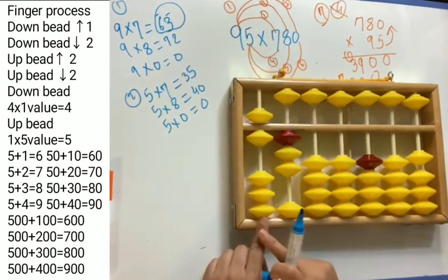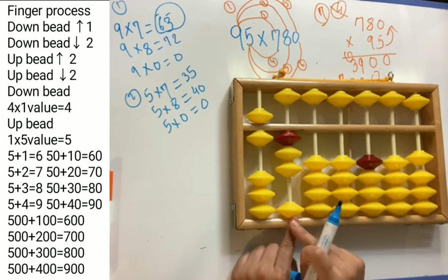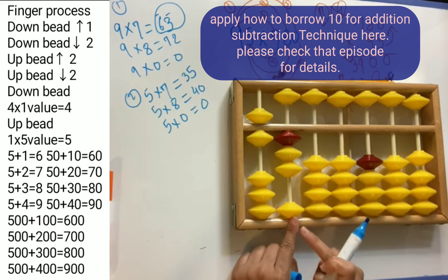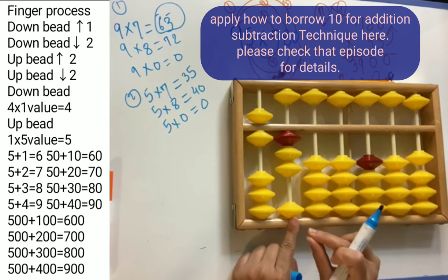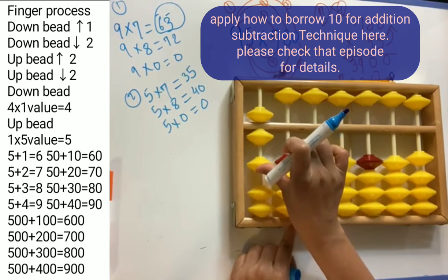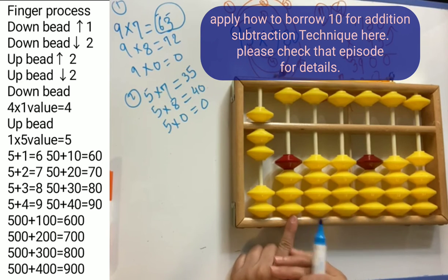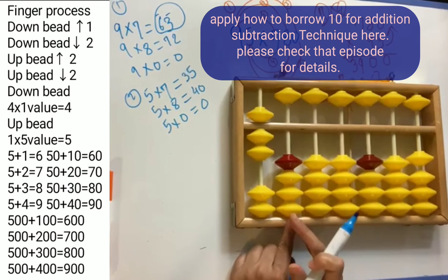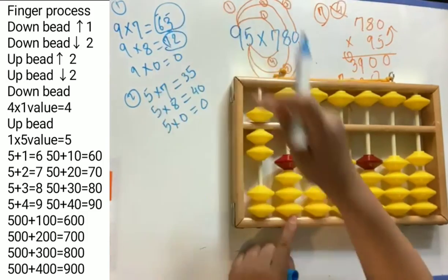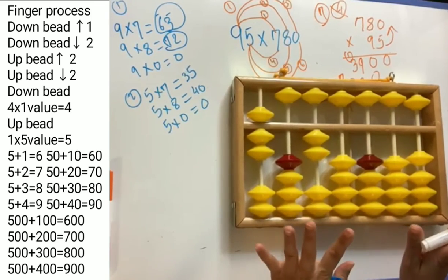After placing that answer, change your pointed rod. Next is 9 × 8 = 72, so 7 goes in this rod and 2 in the next rod. But we only have 5 and 1 which equals 6 — we don't have 7 in this rod. So first reduce 3 from the same rod and borrow this one. This is the borrowing technique from addition and subtraction — please check that episode, because without that technique you won't understand what's happening here. So we place 7 here and 2 in this rod. Then 9 × 0 = 0, so we don't need to place anything — just leave that.